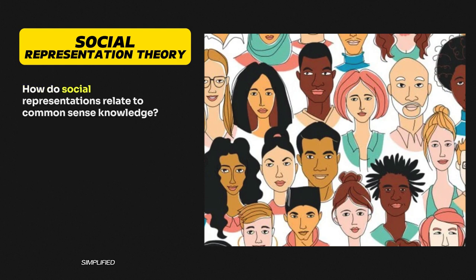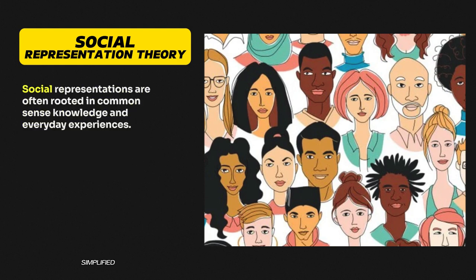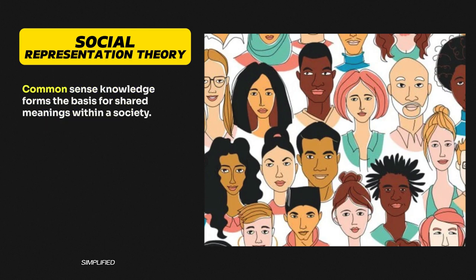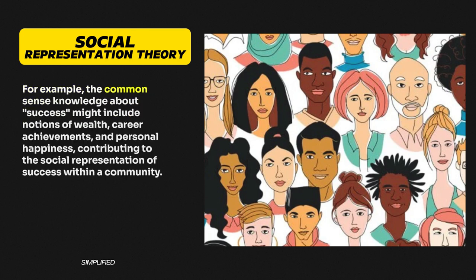Question 2: How do Social Representations relate to Common Sense Knowledge? Social representations are often rooted in common sense knowledge and everyday experiences. Common sense knowledge forms the basis for shared meanings within a society. For example, the common sense knowledge about success might include notions of wealth, career achievements, and personal happiness, contributing to the social representation of success within a community.